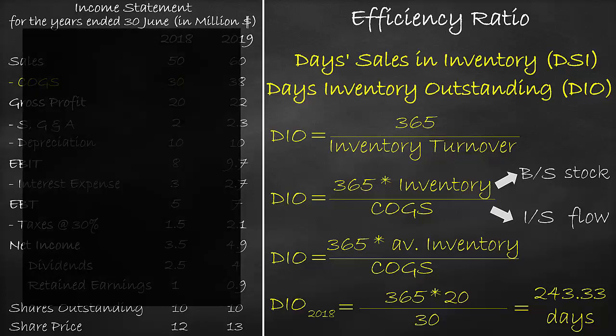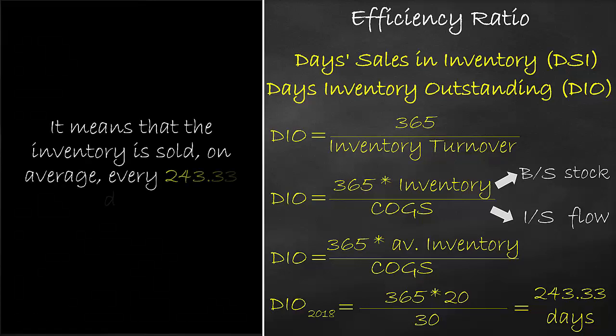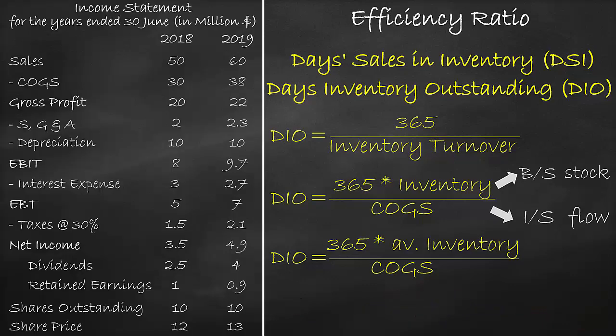The unit of days inventory outstanding ratio is days. It means that the inventory is sold, on average, every 243.33 days. The shorter the days inventory outstanding, the better.